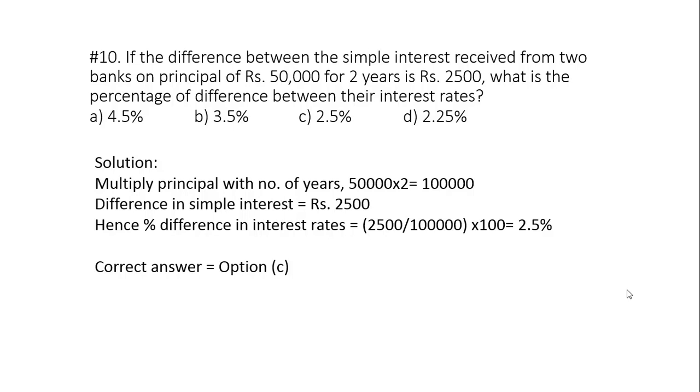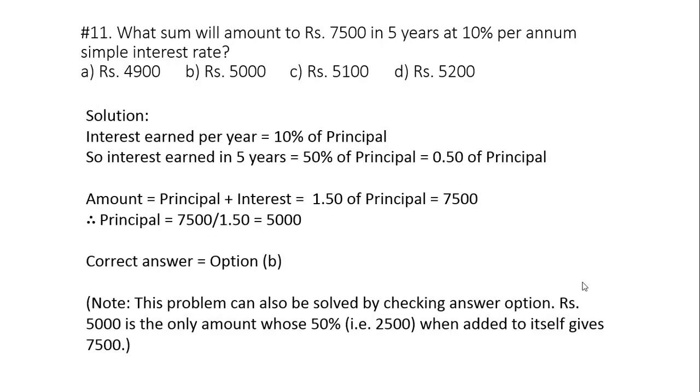Question 11: What sum will amount to rupees 7500 in 5 years at 10 percent per annum simple interest rate? Since the interest rate is 10 percent per annum, it means interest earned per year will be 10 percent of principal. So total interest earned in 5 years will be 10 into 5 equals to 50 percent, that is nothing but 0.50 of principal. We know amount is principal plus interest. Interest is 0.50 of principal, so adding both we get 1.50 of principal. Amount is equal to 7500, so principal will be equal to 7500 divided by 1.50, that is 5000. Correct answer is option B.